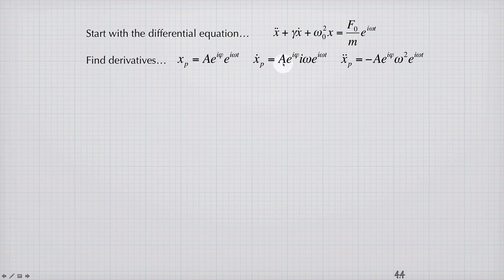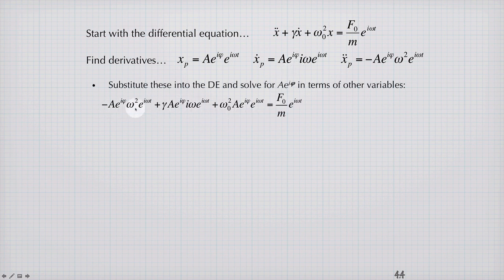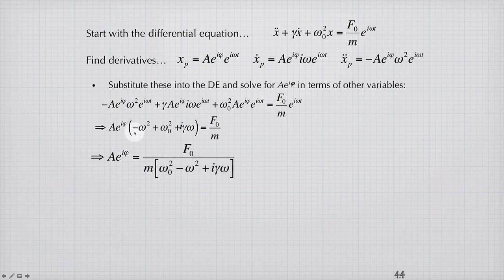In this case, we'll be looking for values of A and phi. So we substitute them in, and we get this expression here. We can remove a factor of A e to the i phi, like this, and then divide through by this term in brackets, giving A e to the i phi equal to this function here. So this is a complex number, and this is also a complex number.